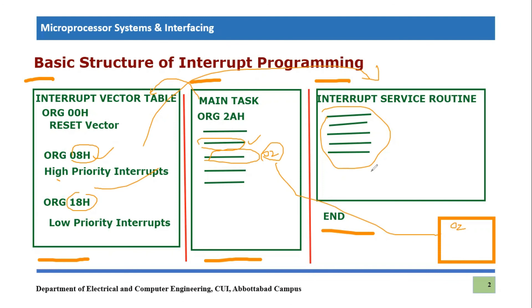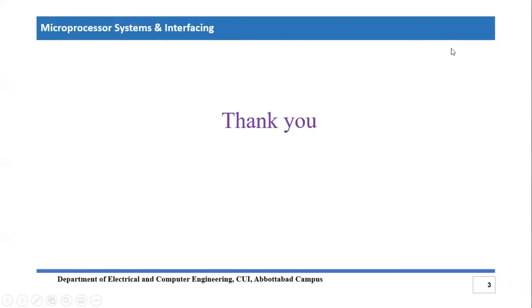When we finish executing the interrupt service routine, we will come back to the main code. We retrieve the last saved address of the next instruction from the stack and return to the instruction we were executing before the interrupt. This is the normal flow of interrupt service programming in the PIC18F452. That's it for this lecture — if you have any confusion or questions, please post them in the comment section. Thank you so much for listening and we will see you next time.